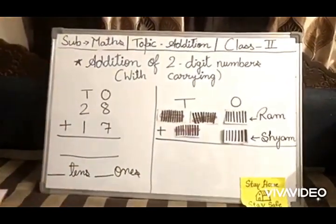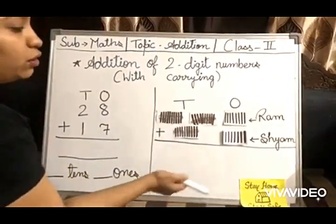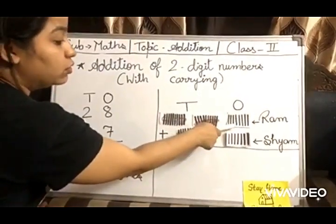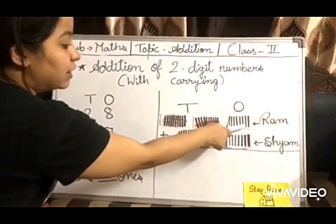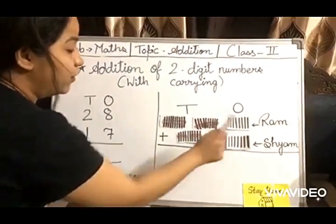Now we will count. So start counting. As you all know, always start with ones: 1, 2, 3, 4, 5, 6, 7, 8, 9, 10, 11, 12, 13, 14, 15.